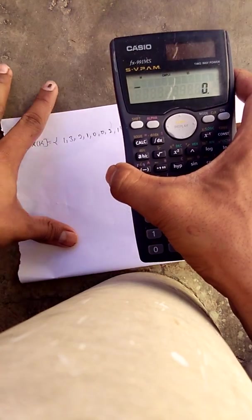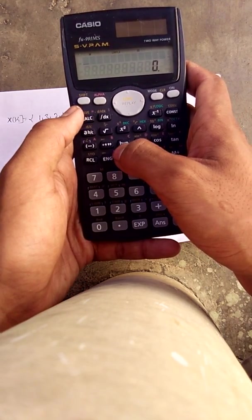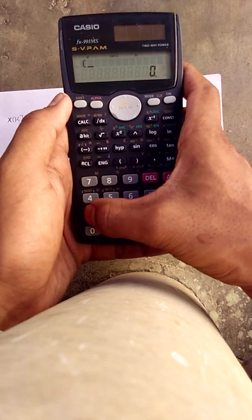It will be in complex mode. Enter the inputs. Here we are calculating 8-point IDFT, so we can take 1 divided by 8 into...